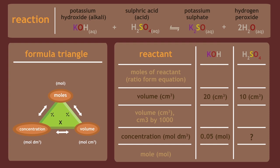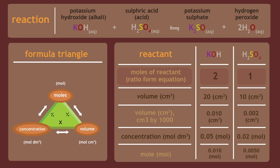Your completed table should look like this. The correct answer is that the concentration of the acid is 0.05 moles per dm³. Note there are half the number of moles of acid because the ratio in the equation is 2:1, where there are two moles of potassium hydroxide to one mole of sulfuric acid.